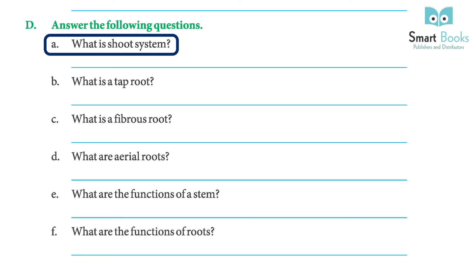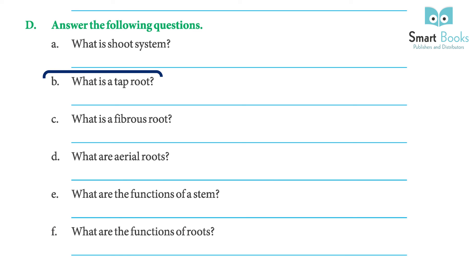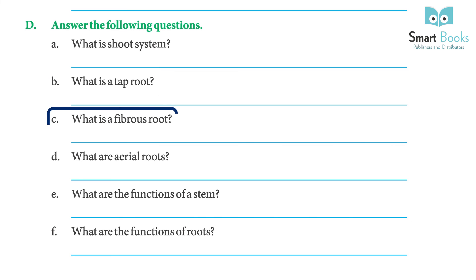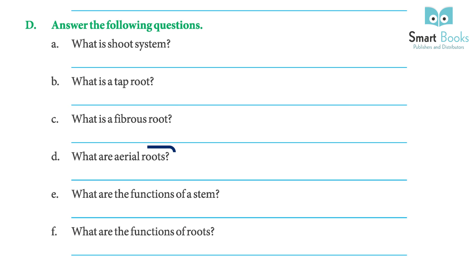Answer the following questions. A: What is the shoot system? Answer: the shoot system includes all those parts of a plant that grow above the ground. B: What is a taproot? Answer: a taproot has a thick center and grows down straight; taproots can be found in mustard, carrot, and pea. C: What is a fibrous root? Answer: a fibrous root consists of many small roots which branch out from the base of the stem. D: What are aerial roots? Answer: big trees like banyan have numerous roots that grow downward from the branches — they are called aerial roots.